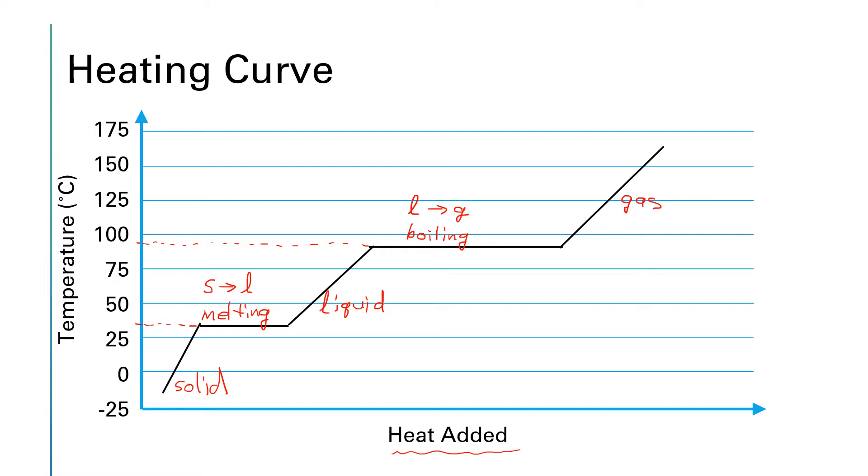Let's see if we can read some important data off of here. If I gave you a curve like this and I asked you what is the boiling point of this substance I'd expect you to look for the temperature where the later horizontal plateau occurs which is somewhere between 75 and 100 so I'd guess that might be something like about 90 degrees.